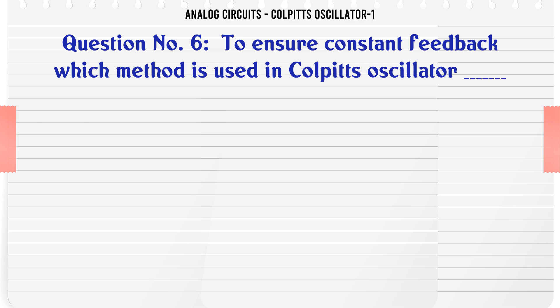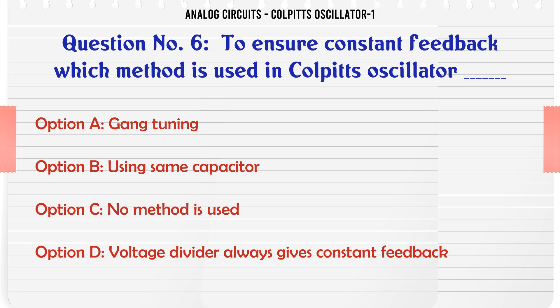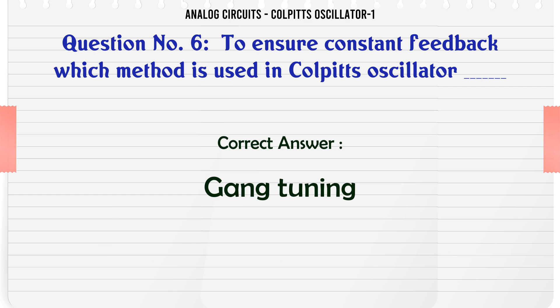To ensure constant feedback, which method is used in Colpitt's oscillator? A) Gang tuning, B) Using same capacitor, C) No method is used, D) Voltage divider always gives constant feedback. The correct answer is: Gang tuning.